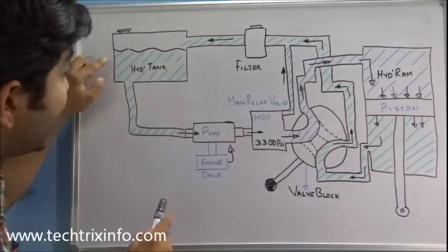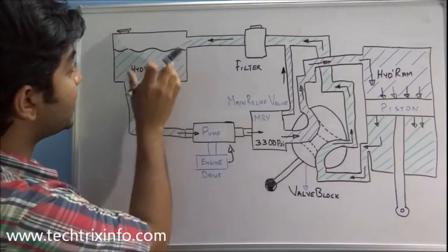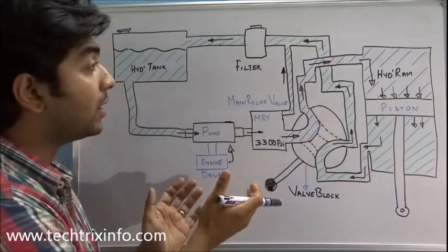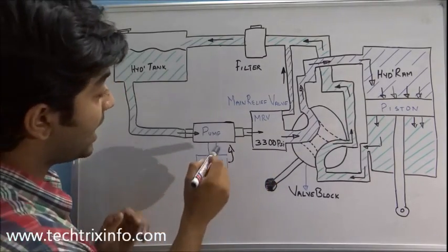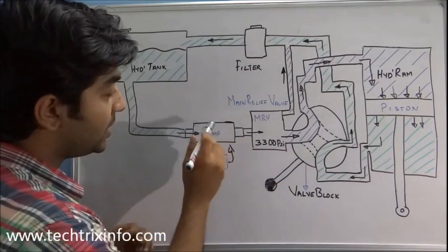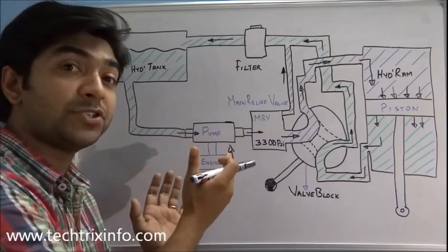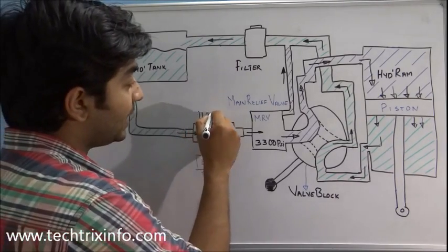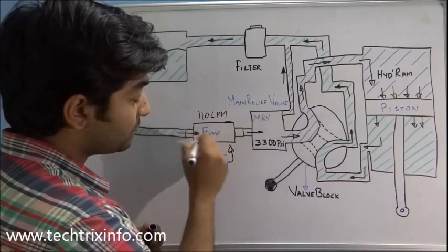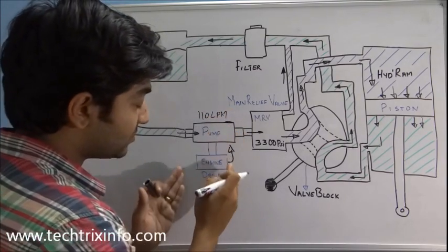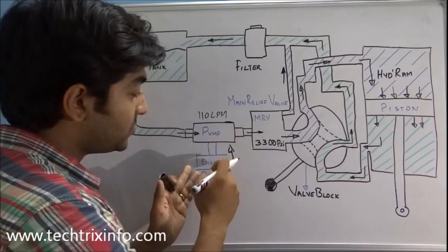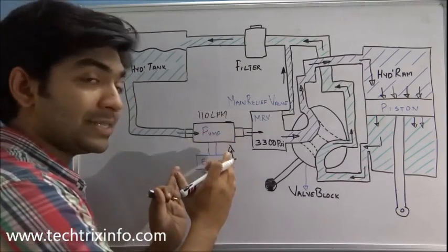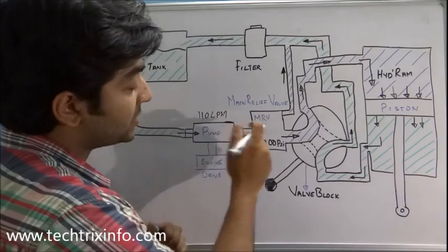Here we have the hydraulic tank, which holds the hydraulic oil for the whole hydraulic operation. This is our hydraulic pump — in a JCB backhoe loader 3DX machine we use a gear pump with a flow of 110 LPM. This pump gets its drive from the engine, which is directly connected to the pump through a shaft.